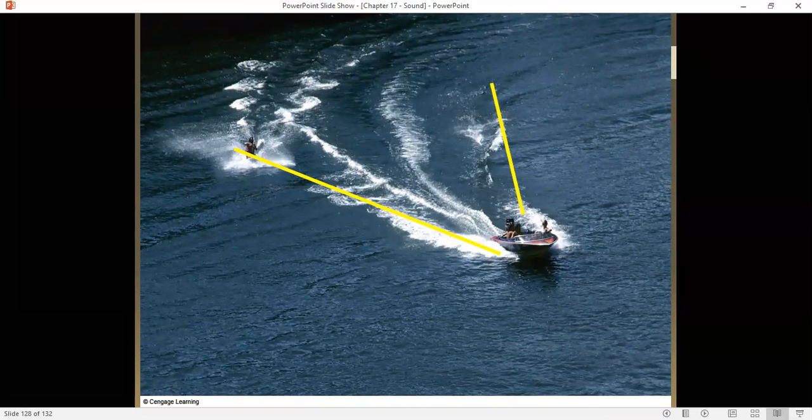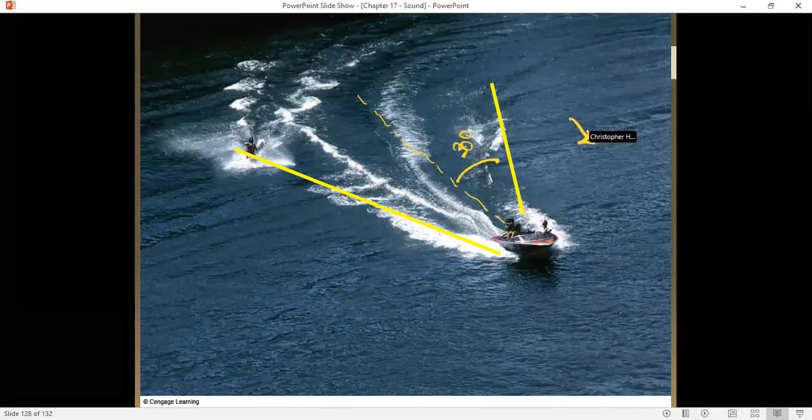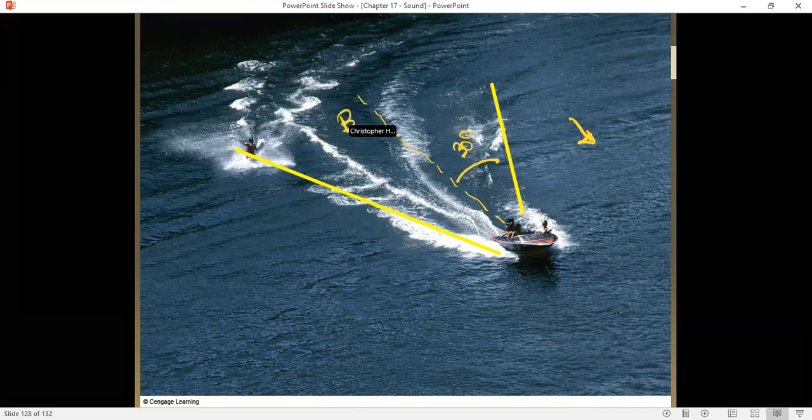We don't just see this for sound waves. We actually see this for the waves from boats. Does this look about 30 degrees? Maybe a little bit more, maybe 40 degrees. As long as the boat is going faster than the speed that surface waves can travel, it'll produce what's called a bow wave. Completely disappears when you go slower than that.